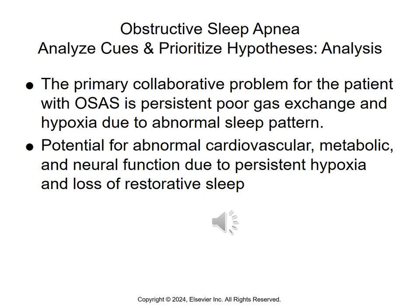The primary collaborative problem for the OSA patient is persistently poor gas exchange and hypoxia due to abnormal sleep patterns, and the potential for abnormal cardiovascular, metabolic, and neurological function due to persistent hypoxia and loss of restorative sleep. Most commonly, this is corrected with noninvasive positive pressure ventilation via continuous positive airway pressure — CPAP therapy — to hold open the airway. CPAP delivers positive airway pressure continuously during each cycle of inhalation and exhalation, improving duration of restorative sleep.